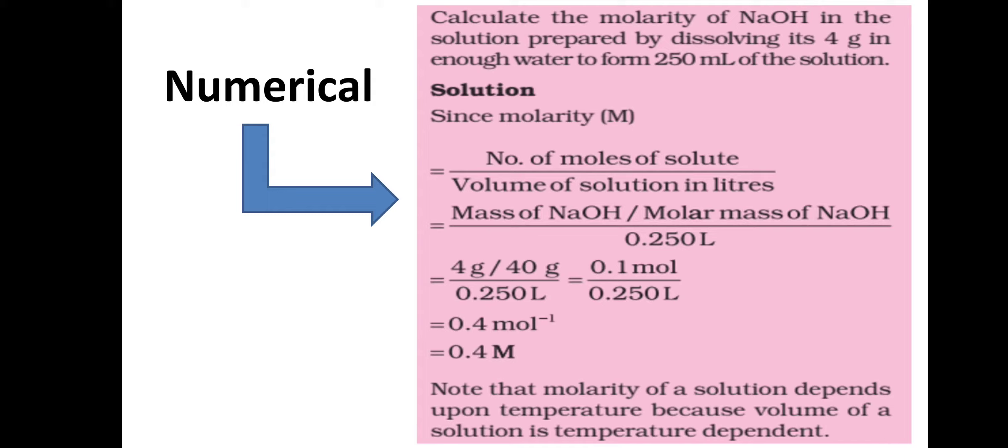Using the molarity formula, the volume must be in liters. So 250 mL = 0.250 liters. Molarity = 0.1 mol / 0.250 L = 0.4 moles per liter. Therefore the molarity is 0.4 M.